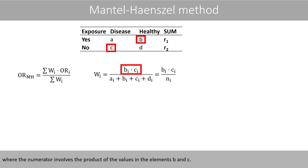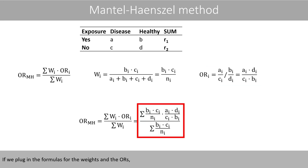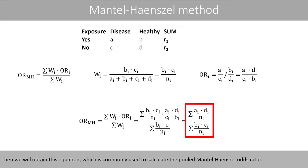The difference is that the weights are calculated in a different way, where the numerator involves the product of the values in elements b and c. From the video about the odds ratio, we know how the odds ratio is calculated. If we plug in the formulas for the weights and for the odds ratios and simplify, we obtain the equation commonly used to calculate the pooled Mantel-Haenszel odds ratio.